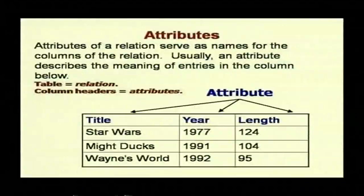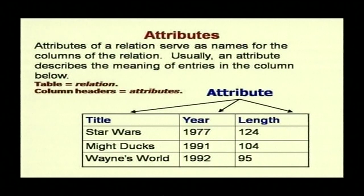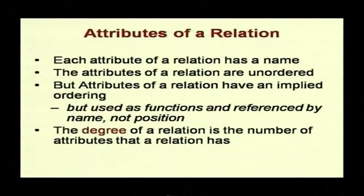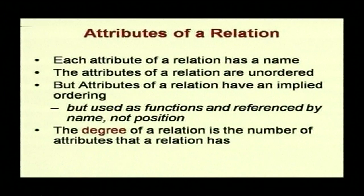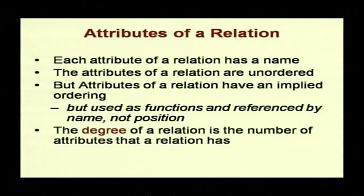Attributes of a relation serve as names for the columns of the relation — for example, title, year, length. Usually an attribute describes the meaning of entries in the column. Each attribute of a relation must have a name. The attributes of a relation are normally unordered — you can place year, title, or length in any order. However, attributes have an implied ordering, and functions are referenced by name rather than by position.